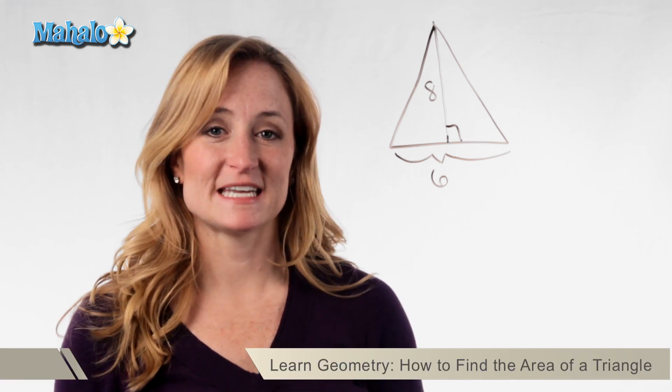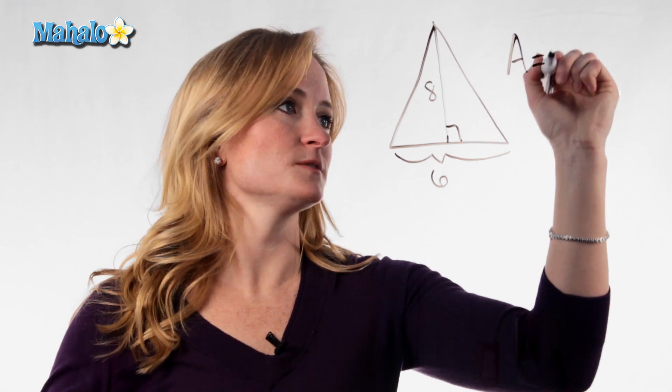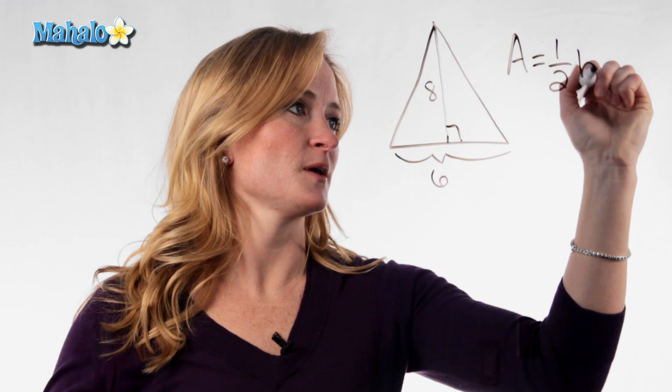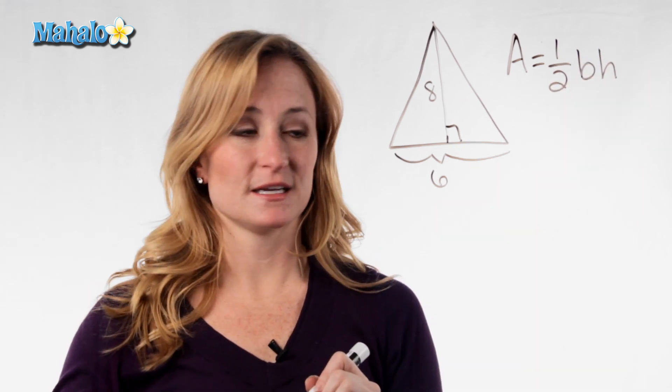Hi, this is Julie with mahalo.com and today we're going to discuss how to find the area of a triangle. The formula for the area of a triangle is A equals one-half base times the height.